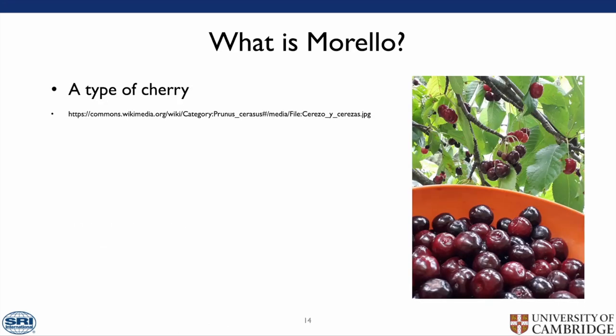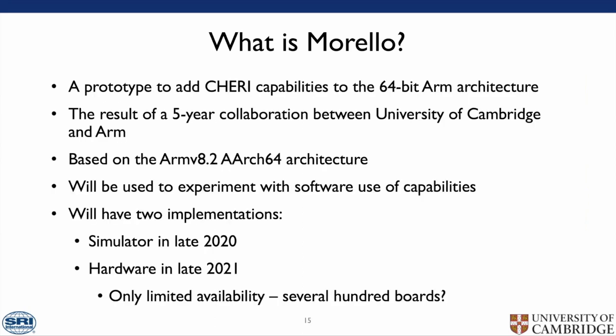What is Morello? Morello is a type of CHERI. It is a prototype to add CHERI capabilities to the 64-bit ARM architecture, the result of five years of collaboration between the University of Cambridge and ARM. It is based on the ARMv8.2 AArch64 architecture and will be used to experiment with software use of capabilities. There will be two implementations: a simulator in late 2020, and a hardware implementation in 2021. Unfortunately there will only be limited availability, as only several hundred boards are expected to be made. As a prototype architecture, ARM does not guarantee forward compatibility; this is only expected to be used to experiment with capabilities in real-world systems.